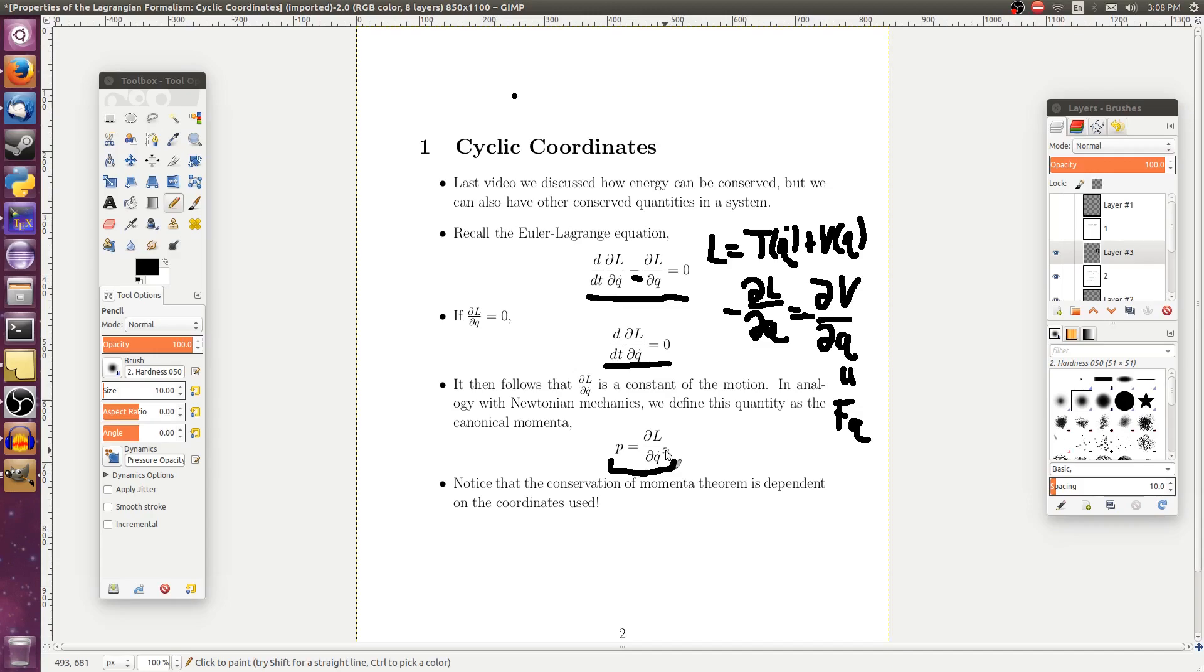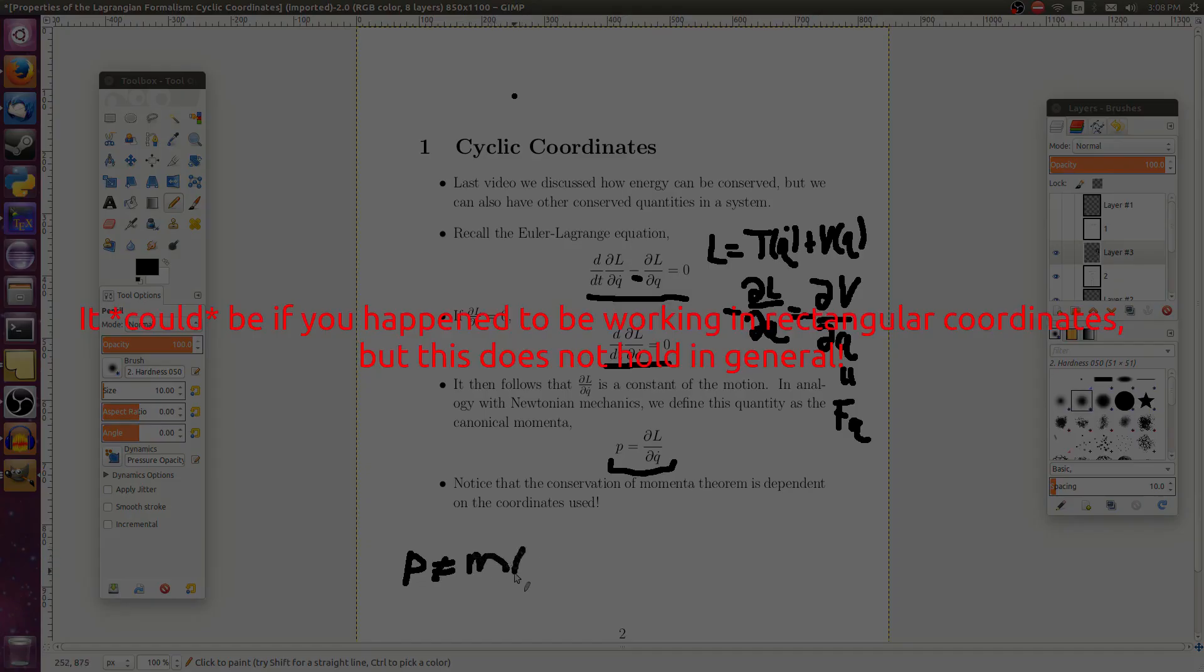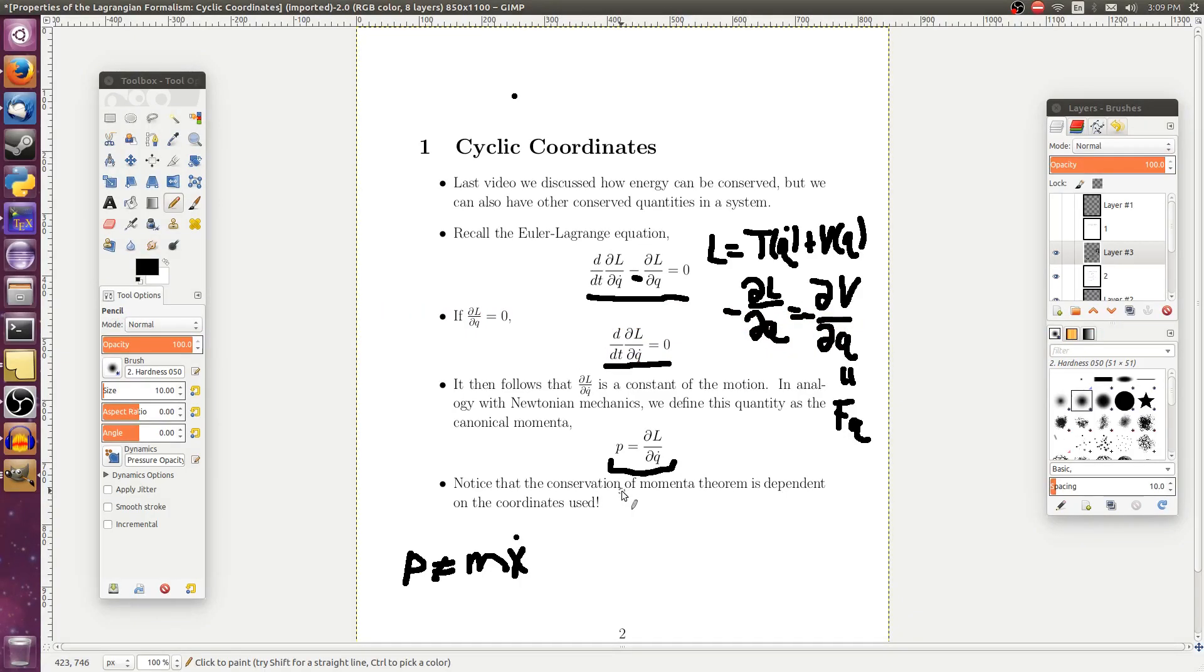So it seems kind of weird that the momenta in this sense isn't going to be just mẋ or something like that. It's going to be dependent on how the Lagrangian looks and what your Q̇ is. So in general, when I say momenta is conserved in this series, I'm usually not talking about mẋ like in Newton. I'm talking about something a little bit more general, just that ∂L/∂Q̇.